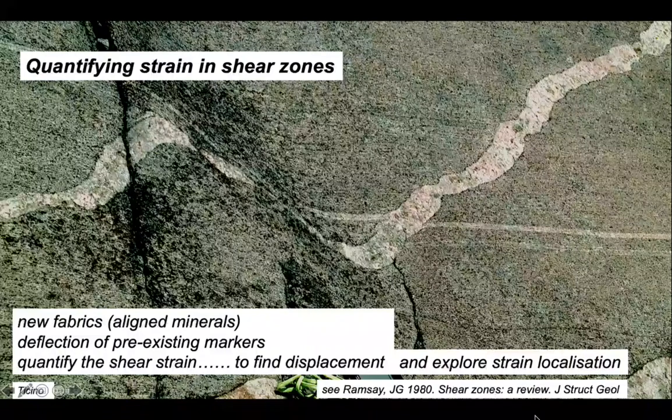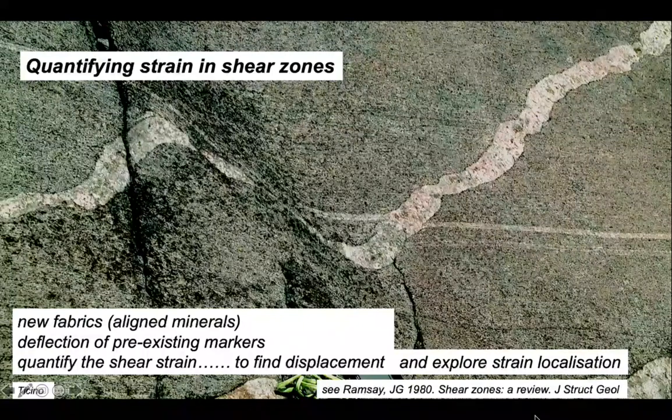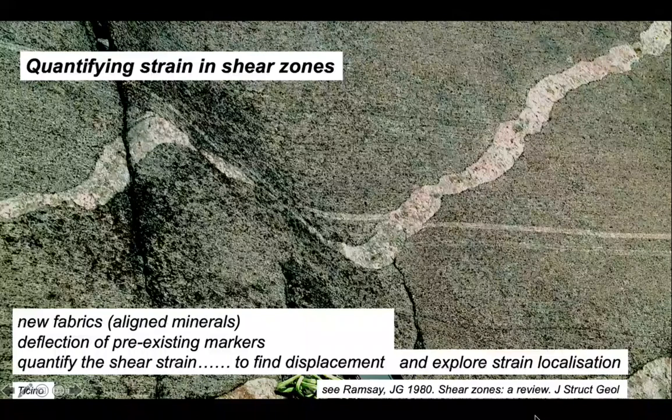But the direct measurement approach does not inform discussions of strain localization. For this, we need to quantify the strain pattern in the shear zone. We've seen how we can use new fabrics from the aligned minerals that define a shape fabric. And we've also looked at the deflection of pre-existing markers, both of which can be used to quantify the shear strain and to plot profiles of shear strain across shear zones. Yes, we can use those to find displacement by integrating them. But we can also explore and quantify the patterns of strain localization in deformed rocks.